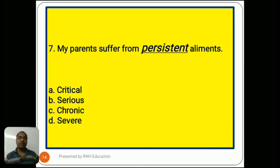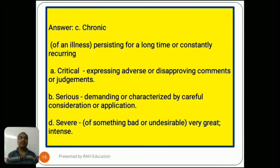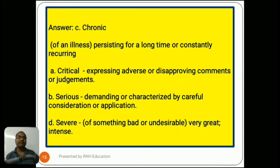Question number 7: 'My parents suffer from persistent ailments.' Options are A) critical, B) serious, C) chronic, D) severe. The answer is C) chronic, meaning of an illness, persisting for a long time or constantly recurring. Option A, critical, means expressing adverse or disapproving comments or judgments. Option B, serious, means demanding careful consideration. Option D, severe, means very great or intense.